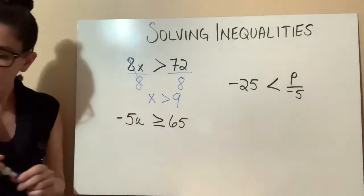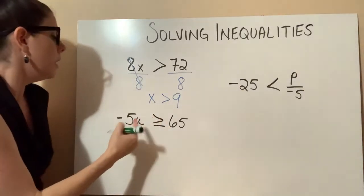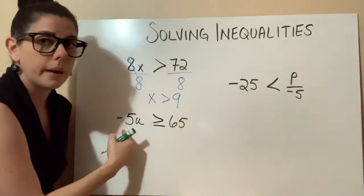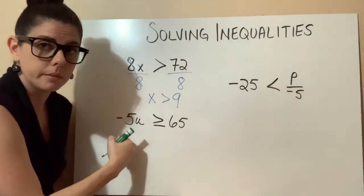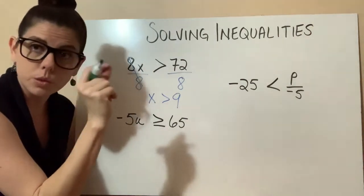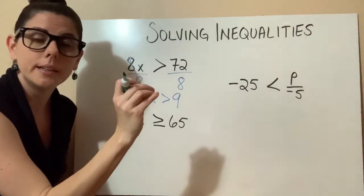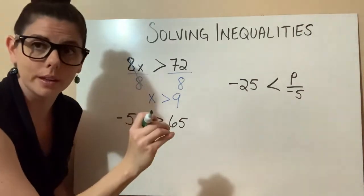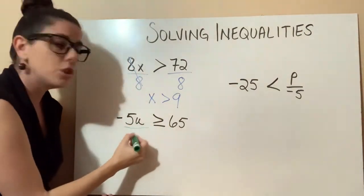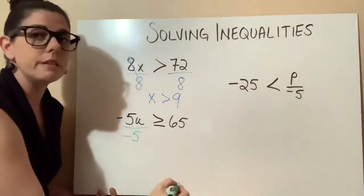So pretty simple. Let's move on to our next one. Here we have our variable being multiplied by a negative number. This is where you have to remember this rule. To get this u by itself, we have to divide by a negative 5.